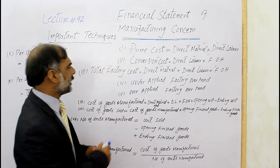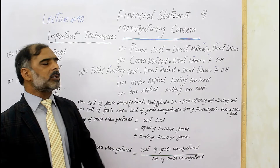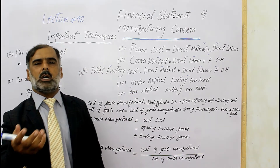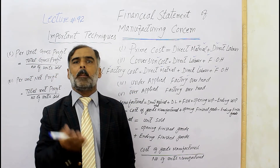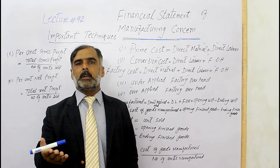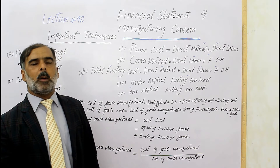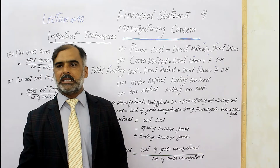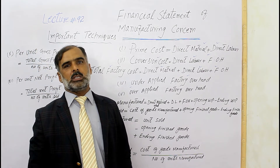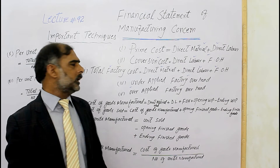Now, if we talk about over-applied factory overhead: when the applied cost is greater than the actual cost, it is over-applied. For example, if the applied cost is 10,000 but the actual cost is 11,000 — wait, if we apply 11,000 but actual is 10,000 — this means the cost is over-applied factory overhead.